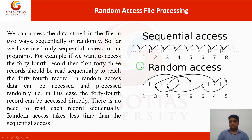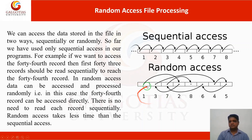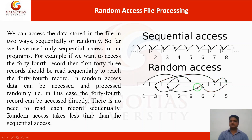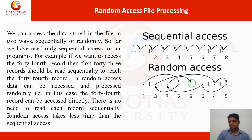In random access, suppose we have a memory operation where data is stored at positions 1, 2, 3, 4, 5, 6, 7, and 8 — but randomly. Your data are stored anywhere in the memory or in your file.